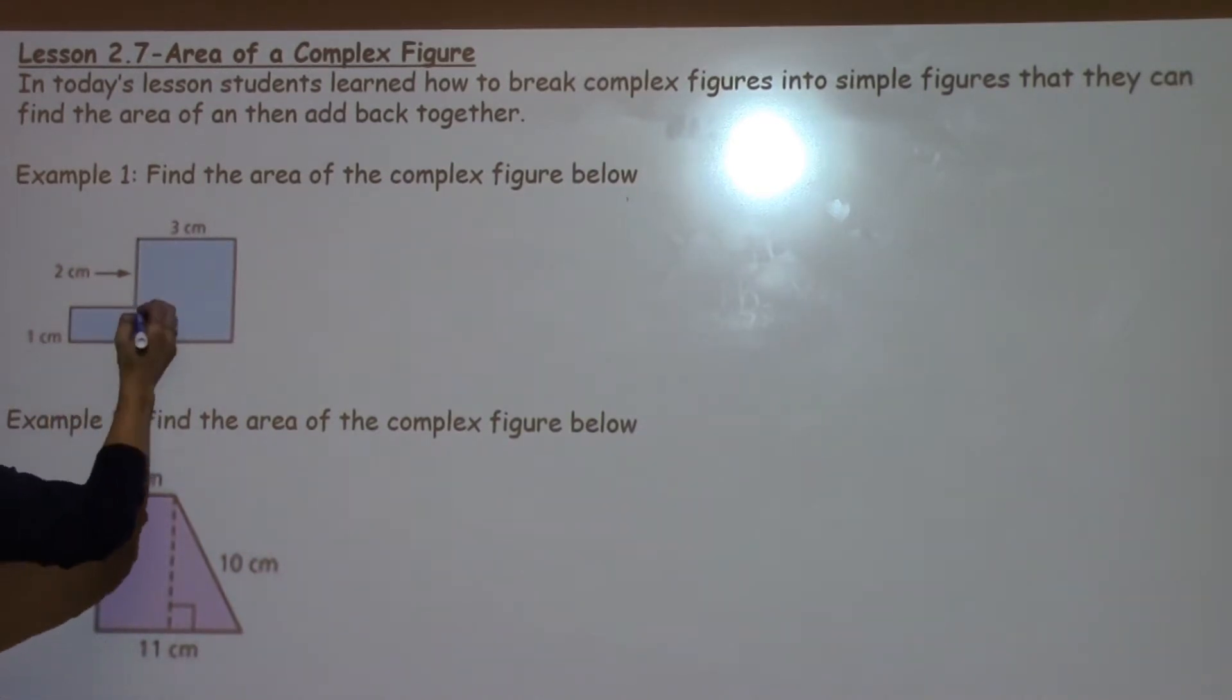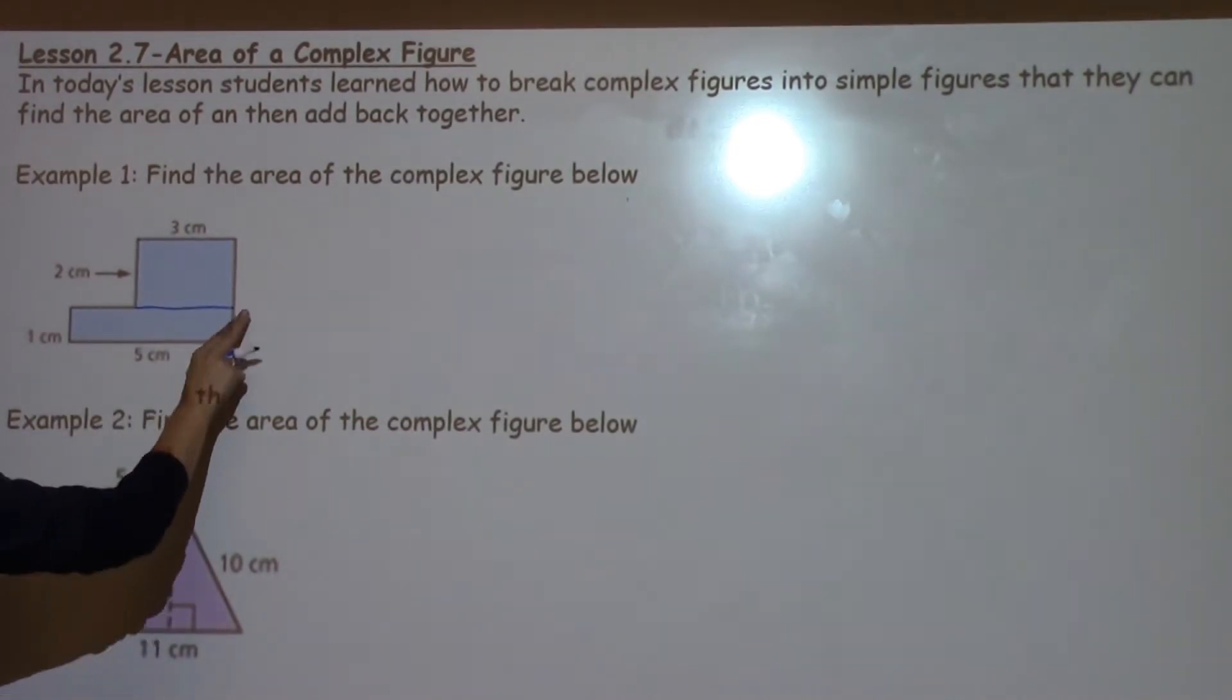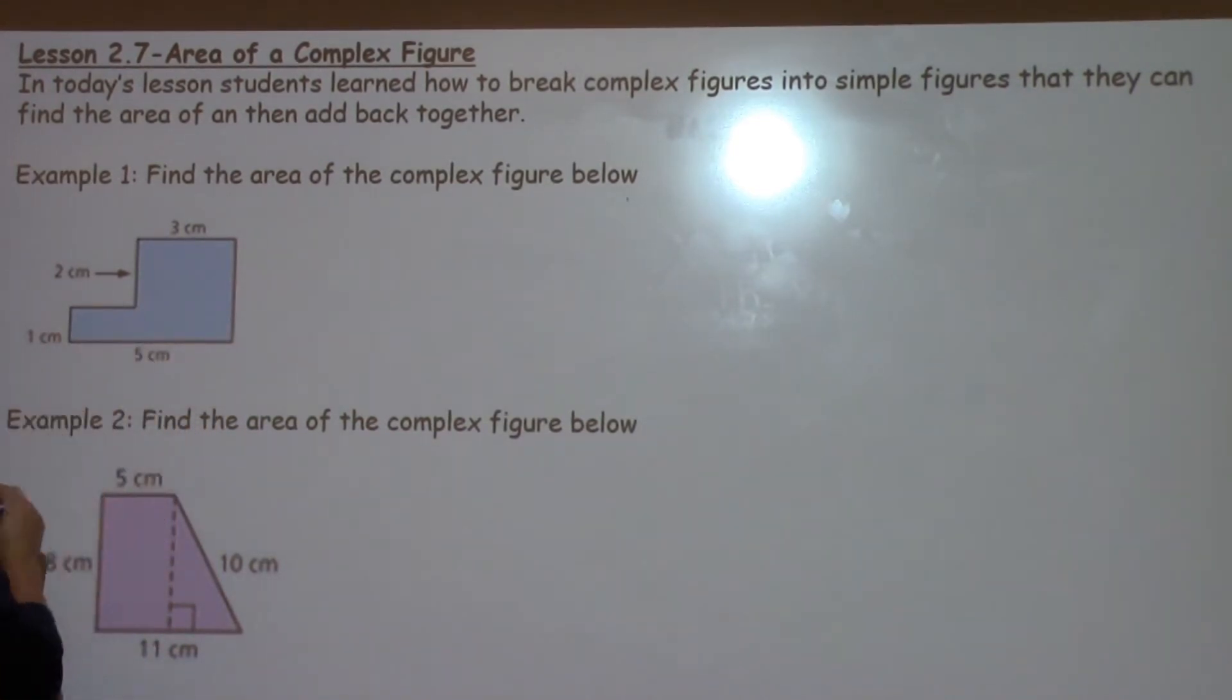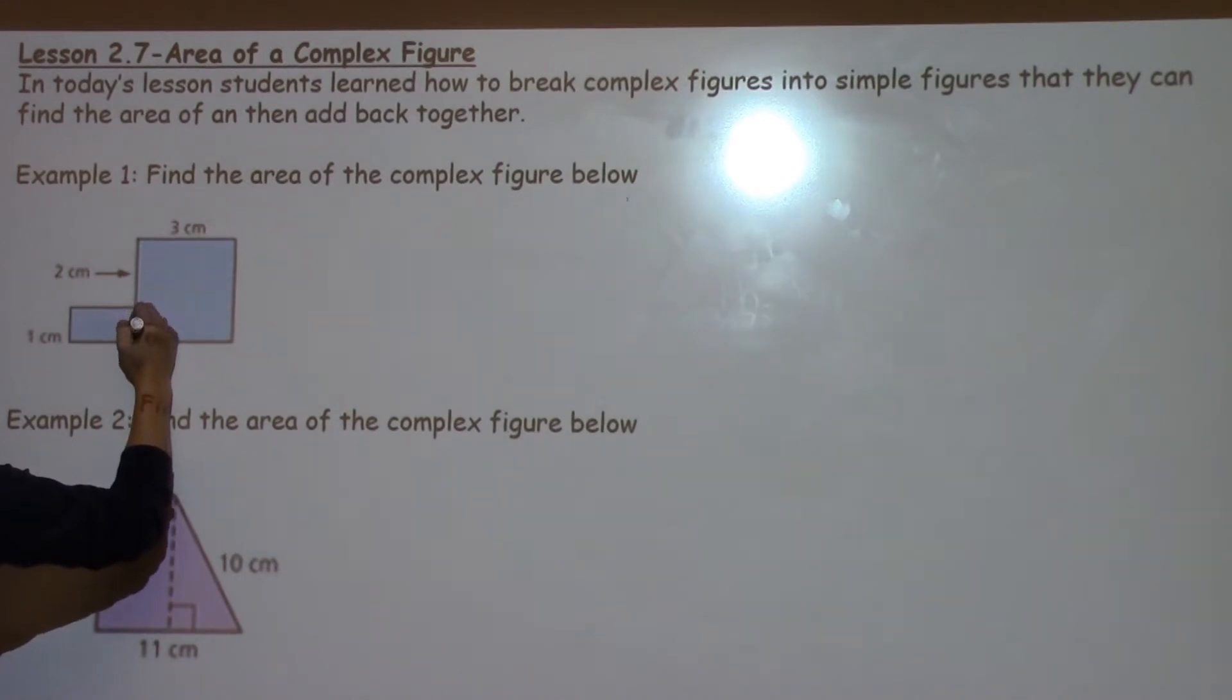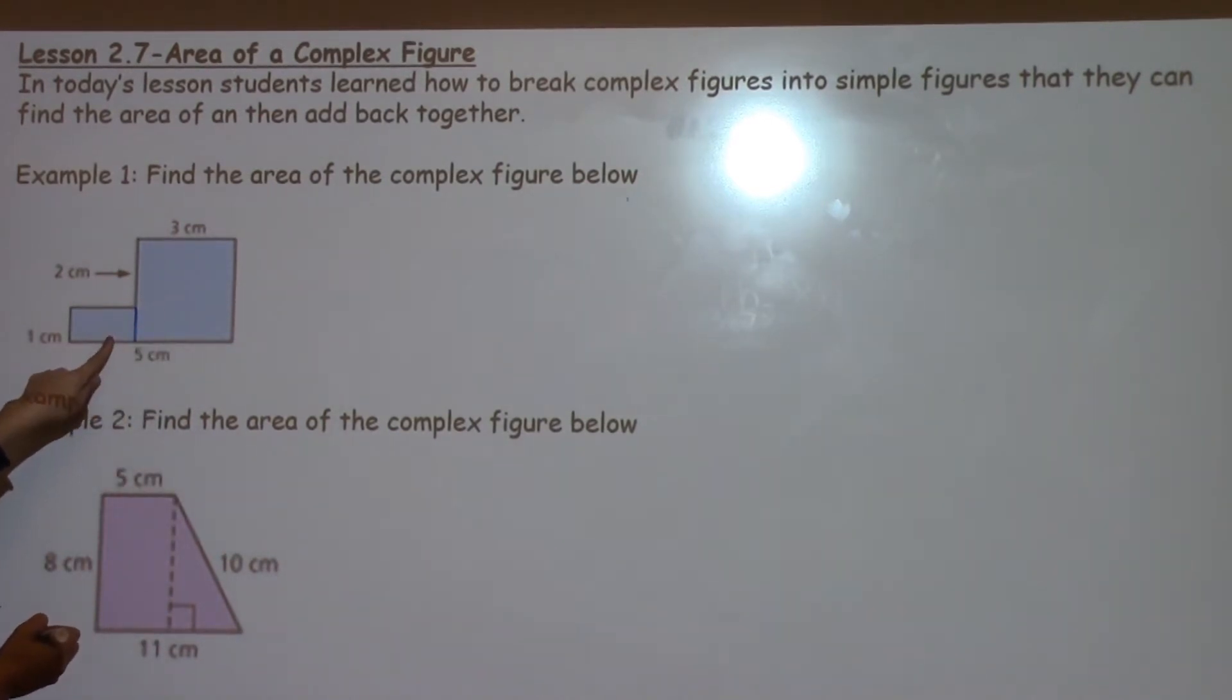Your student might see that they could also draw a line here and make two rectangles. Either way is correct and we will get the same answer no matter what. I'm going to go ahead and chop it into a square and a little rectangle.